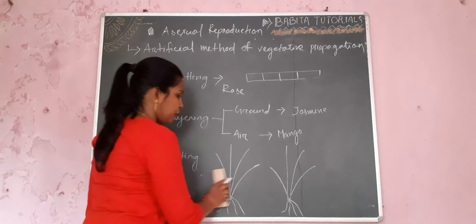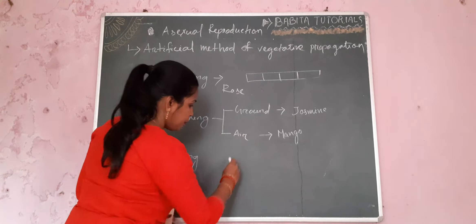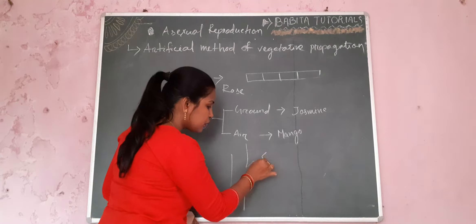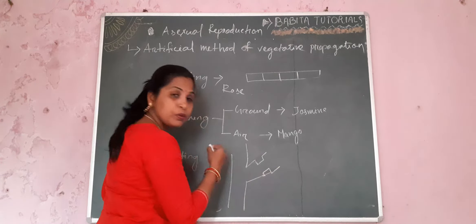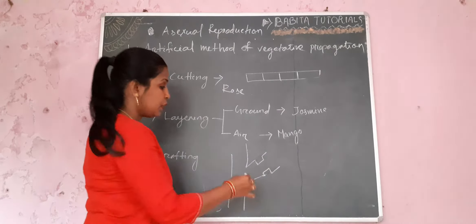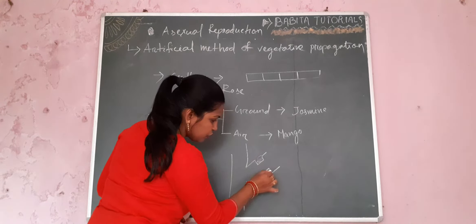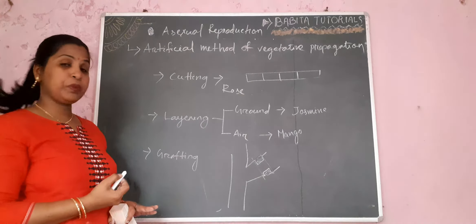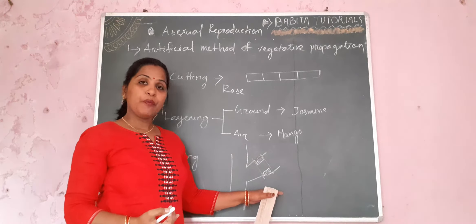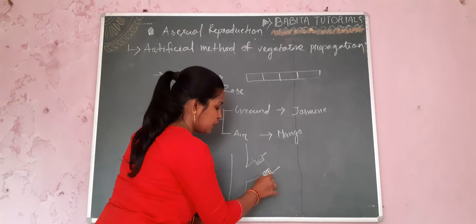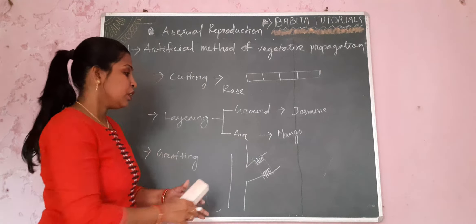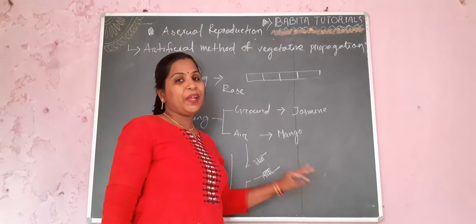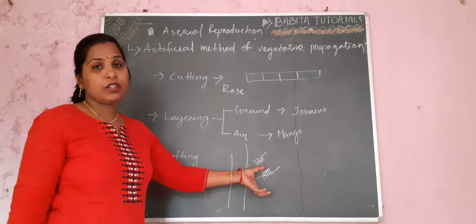In the case of air layering, suppose this is the mango plant. The dead outer covering of the branch will be removed. Then this part will be covered with soil and tied with cloth or tissue paper, and allowed to expose to the air. After a few days, roots will arise from this area. When the roots come out, the branch is cut from the main plant and we will get a new mango plant. That is how air layering is done.